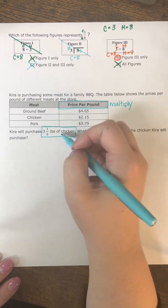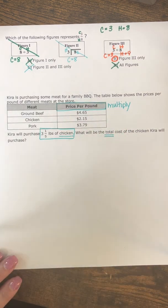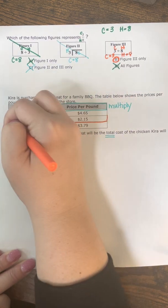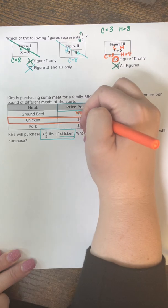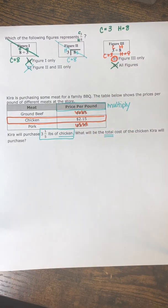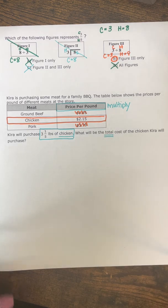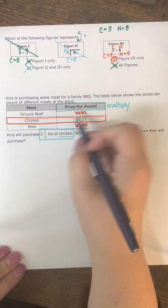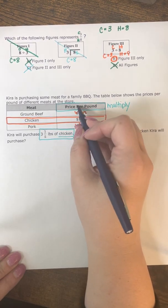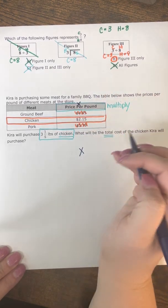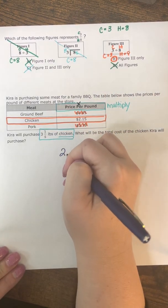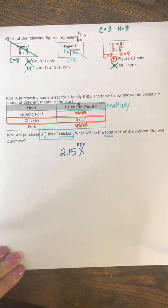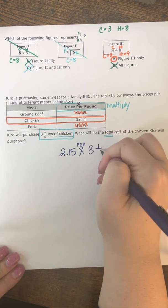For every pound we're going to multiply by the dollar price. We need to focus on chicken, so I'm going to box chicken and scribble out the others because we don't care about those prices right now. I know to multiply, so: cost times pounds — that's $2.15 times 3 and 1 fifth pounds.